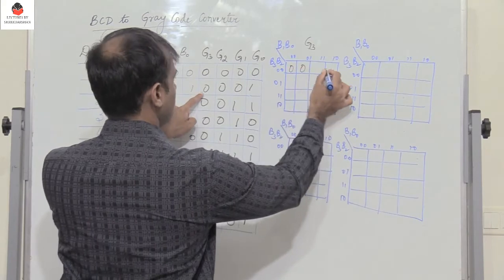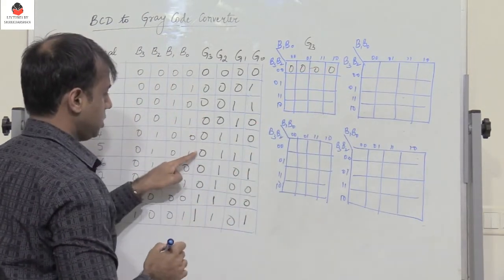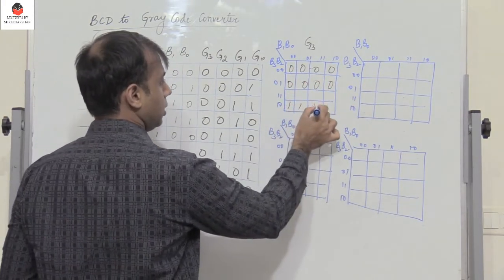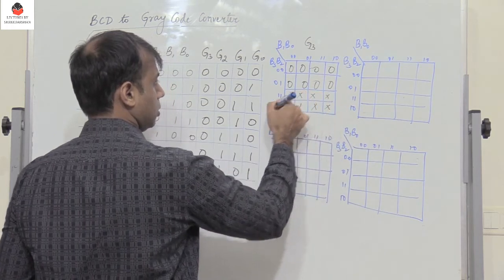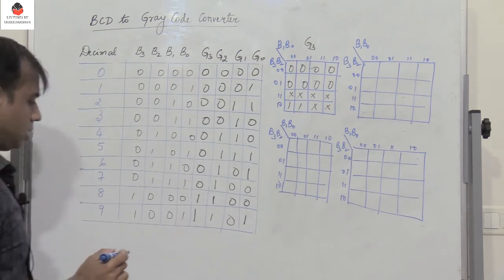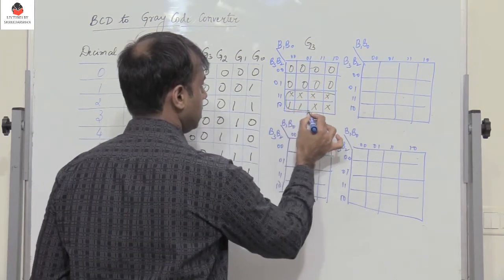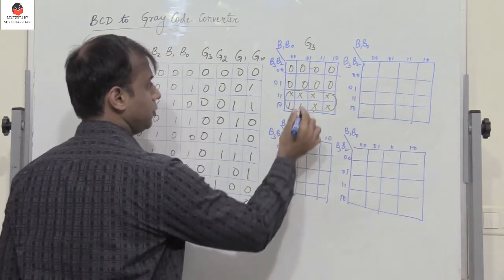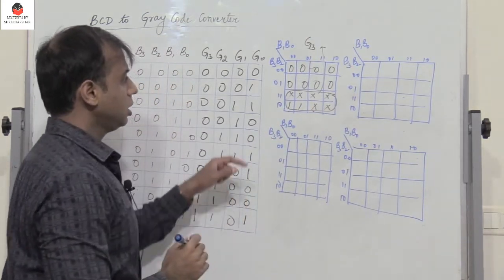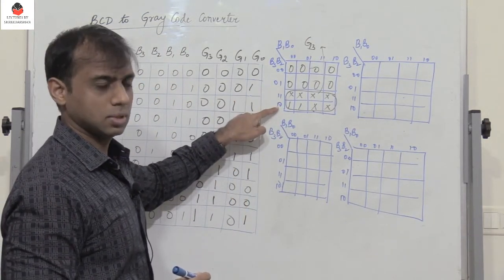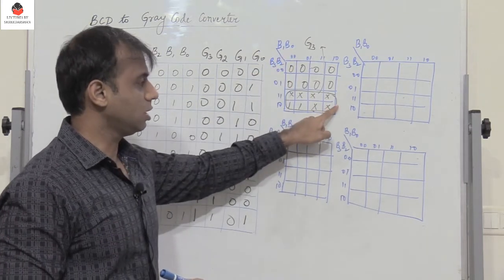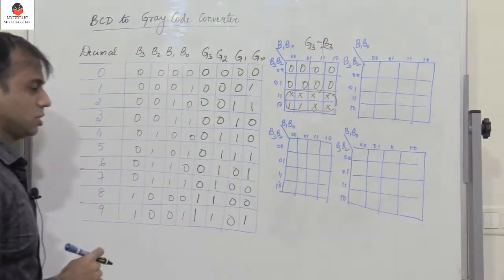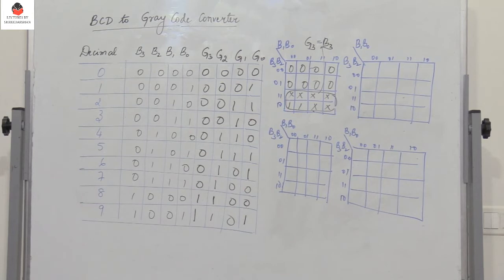For G3, I have 0 0 0 0 for the first four entries, then the next four 0s, followed by two 1s, and all the remaining are don't cares. We can combine all these 8 cells, and when we observe the grouping, B2, B1, and B0 all get eliminated because they appear in complementary form. So the simplified expression for G3 is simply G3 = B3.